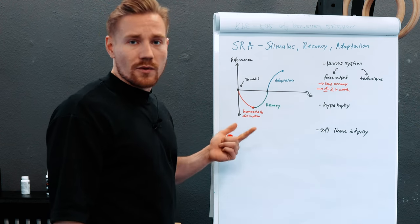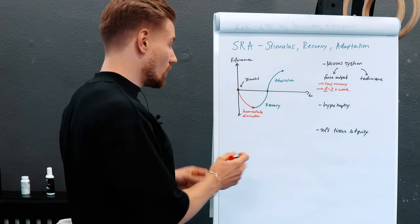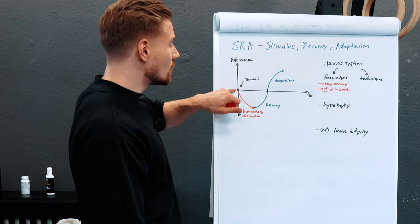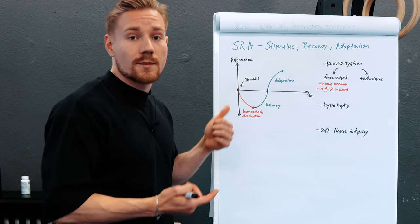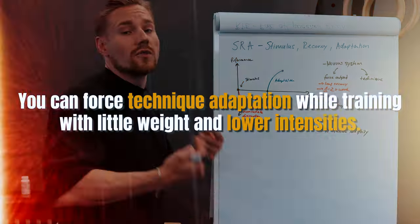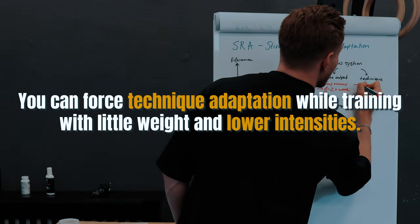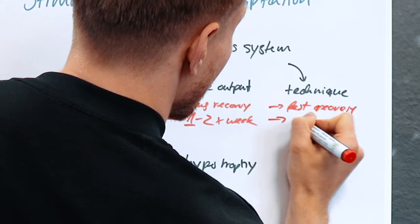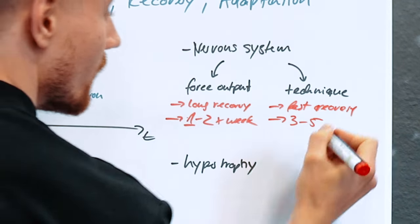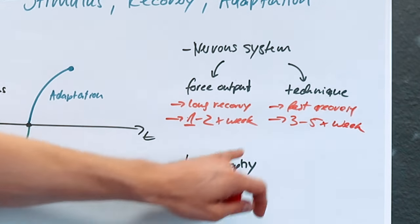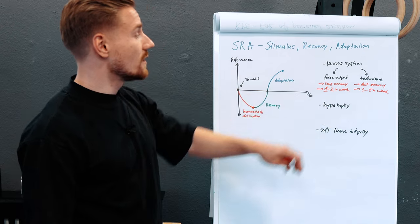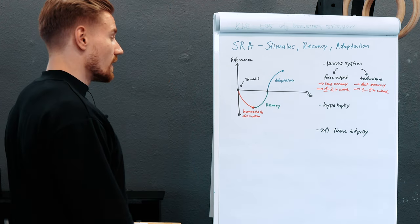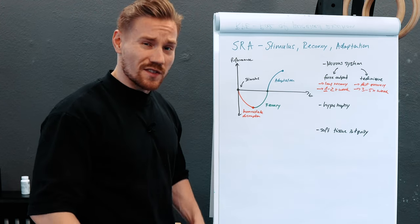If we want to force technique adaptation, that's an SRA curve that is pretty responsive, because you don't need a lot of stimulus — you can force technique adaptations with very little weight, just going repetitively through the movement. So here we have fast recovery, and we can train technique basically every day. Three to five times a week is a good orientation, depending on how heavy or intense the stimulus is.